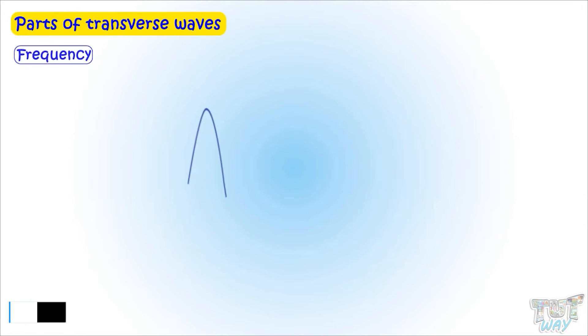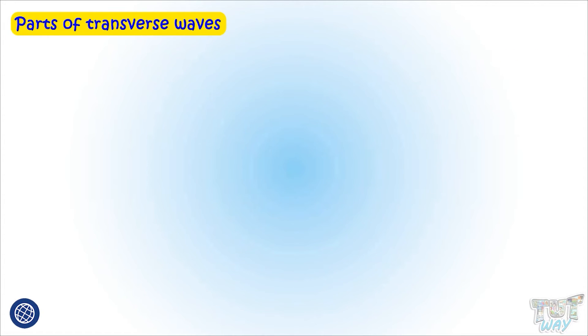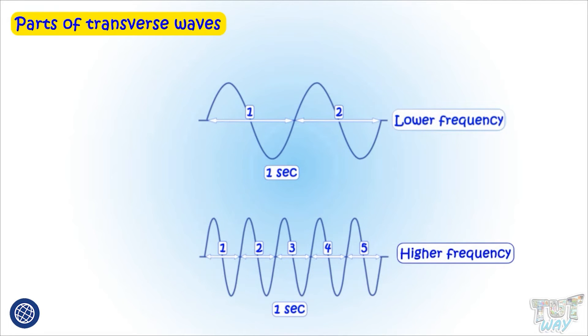Now next, learn what is the frequency of the wave. It is the number of wavelengths produced in a given amount of time. Now let's learn it with an example. Let's see two different transverse waves produced in one second. In the first wave, only two waves are there. And in the second wave, we can see there are many wavelengths. Let's count. Here we have five wavelengths produced in one second. So the first one has lower frequency, then the second one has more frequency.